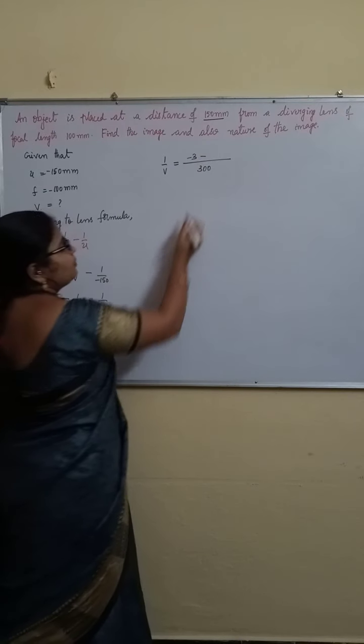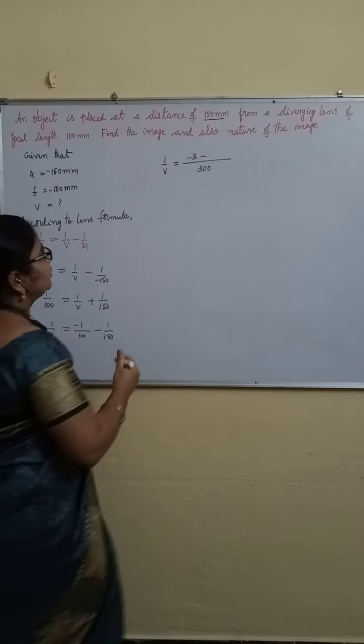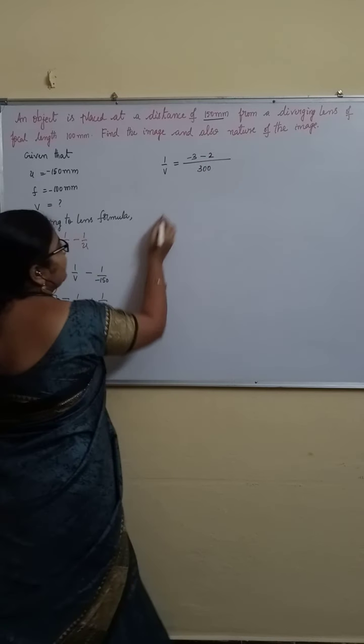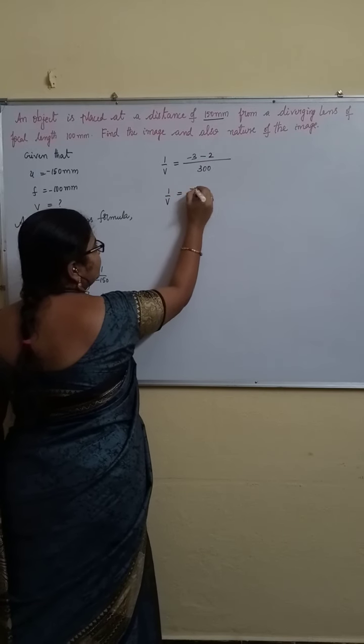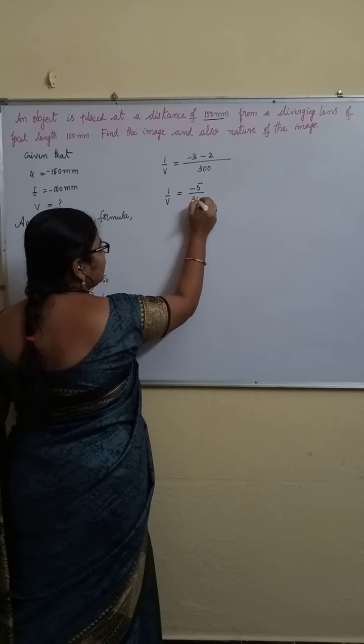150 table, 300 will come for 2 times. 2 into 1. Okay? Now 1 by V is equal to minus 5 by 300.